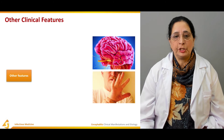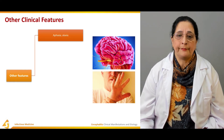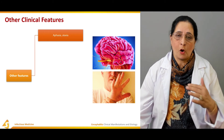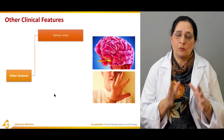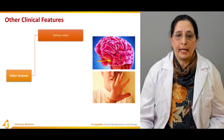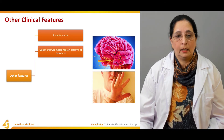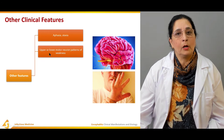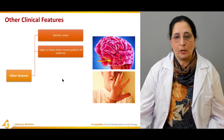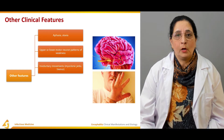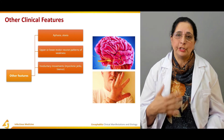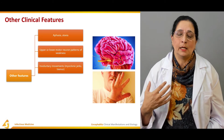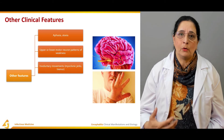Some other clinical features associated with encephalitis include aphasia and ataxia. Ataxic patients cannot walk straight, and aphasia means difficulty in speaking. There is also upper or lower motor neuron pattern of weakness, involuntary movements, and myoclonal jerky movements — similar to those seen in Parkinsonism.